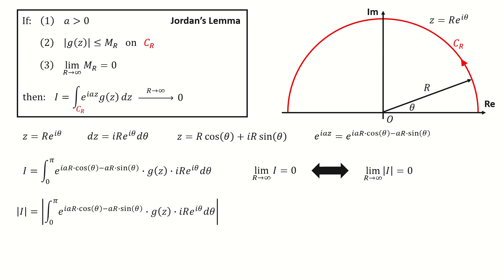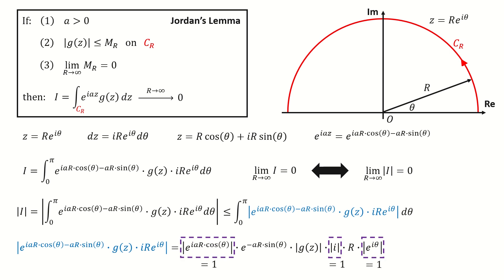So we take the modulus on I. And then we use this inequality. The modulus of the integral is less than or equal to the integral of the modulus. And next, we write this blue term into this form. So for these three terms, their modulus equals 1. And we got here.